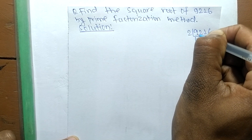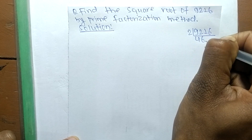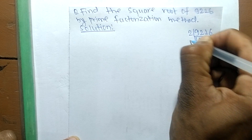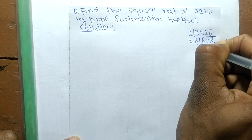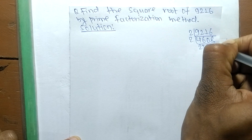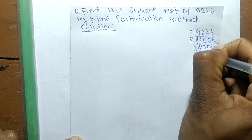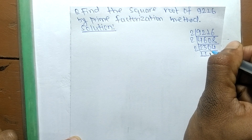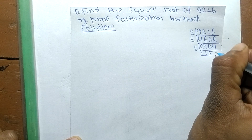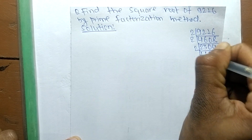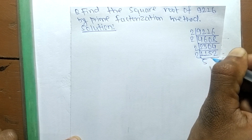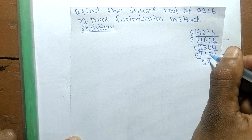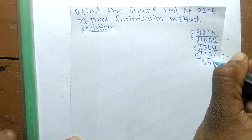We divide: 2 times 4 means 8, remainder 1. 2 times 6 means 12, so remainder 0. 2 times 8 means 16, so 2 times 2 means 4, 2 times 3 means 6, remainder 0. 2 times 4 means 8, 2 times 1 means 2, remainder 1. 2 times 5 means 10, remainder 1. 2 times 7 means 14, remainder 1.